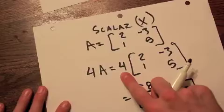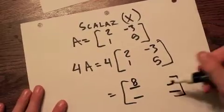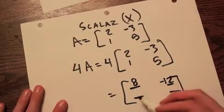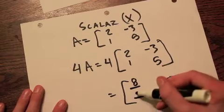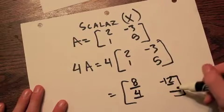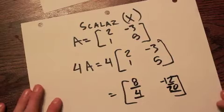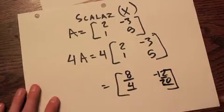In the one two position, four times negative three is negative twelve. In the two one position, four times one is four. And the two two position, four times five gives me twenty. That is scalar multiplication.